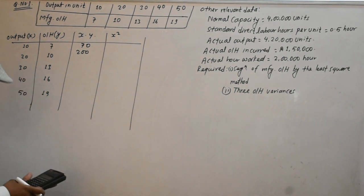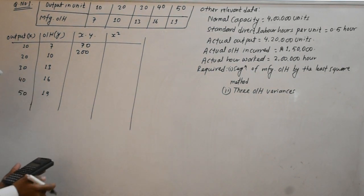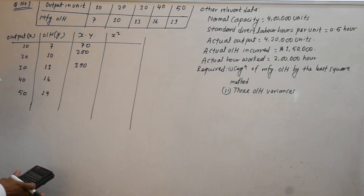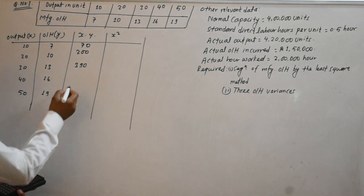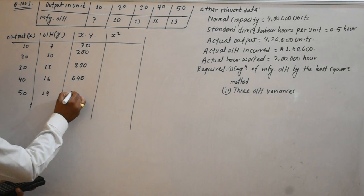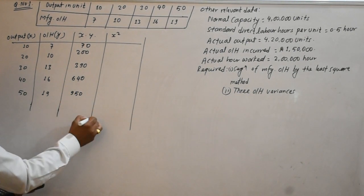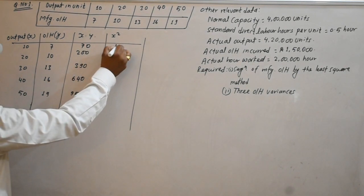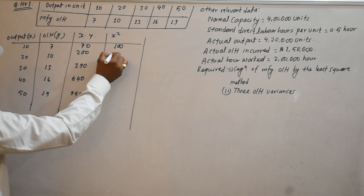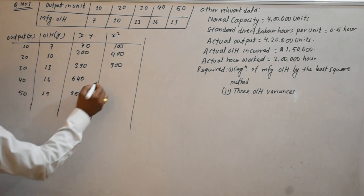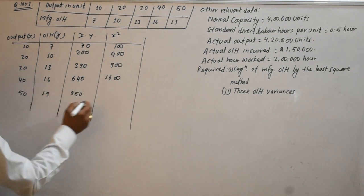30 times 40 is 640 and 19 times 50 is 950. Now for x squared: 10 squared is 100, 20 squared is 400, 30 squared is 900, 40 squared is 1600, and 50 squared is 2500.